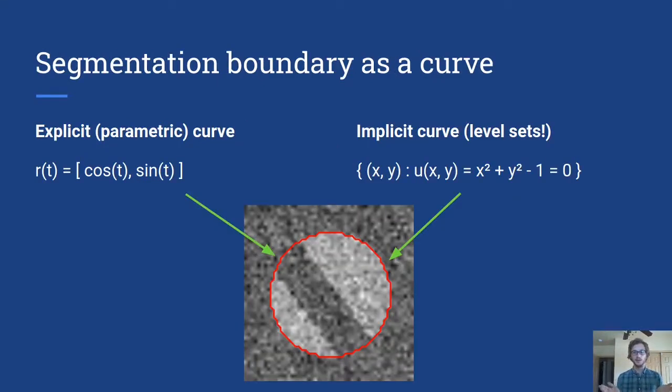So what are level sets and what do they have to do with image segmentation? Well, if we think about segmentation, the segmentation boundary as a curve, you might recall that there's a couple of different ways to represent a curve. We can do it explicitly, like on the left we have a parametric curve. So it's a vector of the x element and the y element, cosine of t, sine of t. It's explicit because I give you a t and you tell me the x and y.